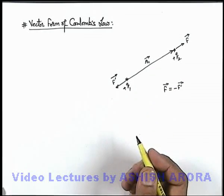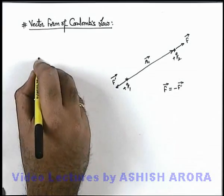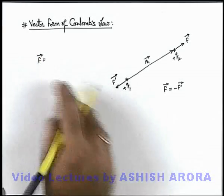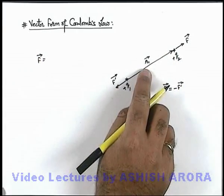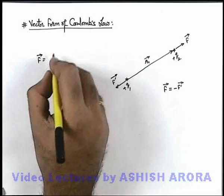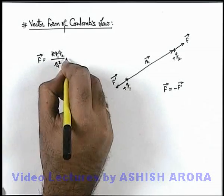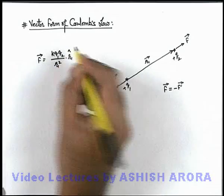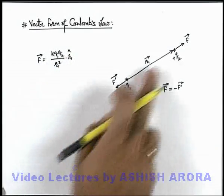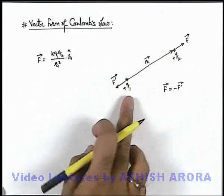And in magnitude as these are equal, here we can write that F vector which is acting in the direction of this position vector r1, here we can write it k q1 q2 by r1 square multiplied by r1 cap. That is the unit vector in the direction of q2 from q1. This is the magnitude of force and this is the unit vector in the direction of F vector.